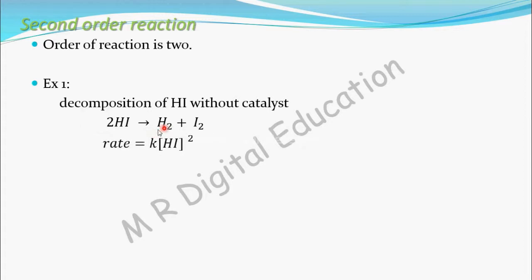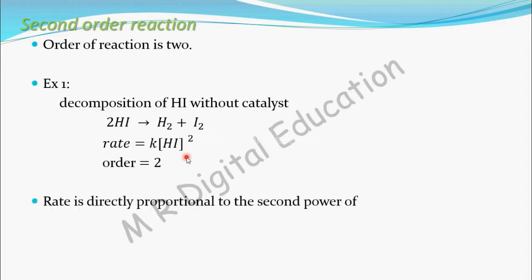The rate equation for this reaction can be written as: Rate = K × [HI]². The power is 2, so the order of the reaction is 2. For a second order reaction, rate is directly proportional to the second power of the concentration of the reactants.